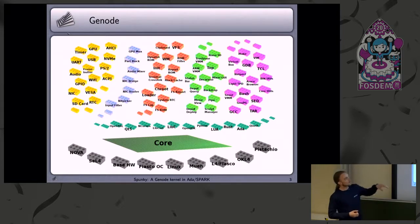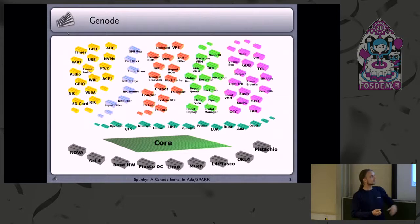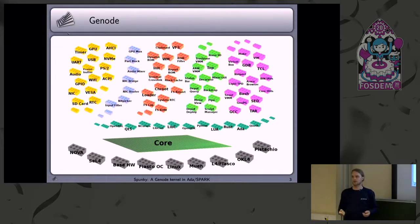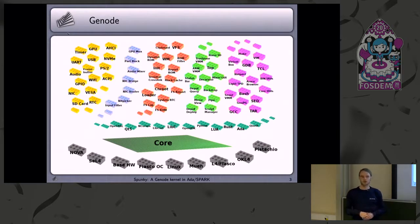On top of that, you have several applications. These green bricks are native applications that run natively on Gnode. For instance, you have depo query and depo deploy — tools for the package management which Gnode brings. Or for instance, the guide manager, which is a managing component for our desktop system.